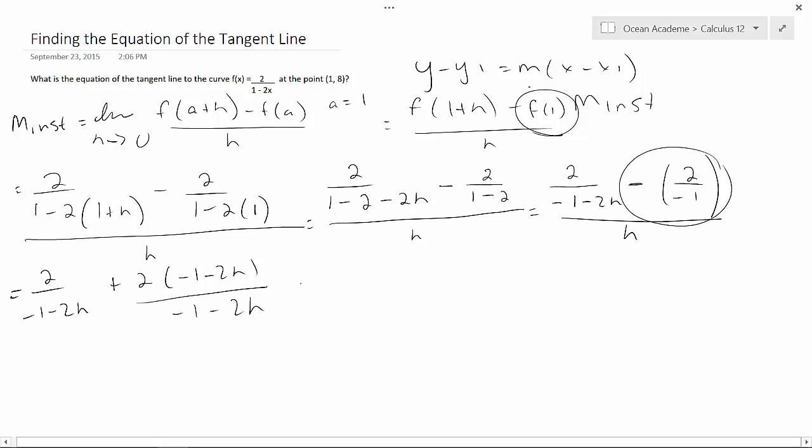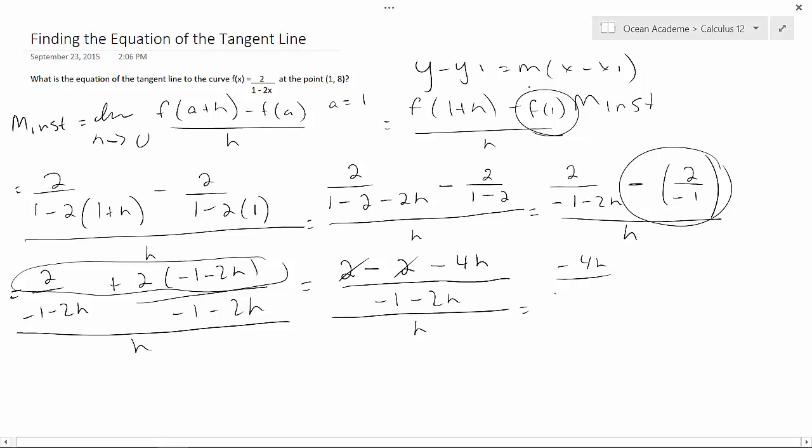So let's simplify again. This is going to be (2 - 2(-1-2h))/(-1-2h), which is 2 + 2 + 4h all over (-1-2h), and this is all over h. Now to simplify, 2 minus 2 that cancels out.